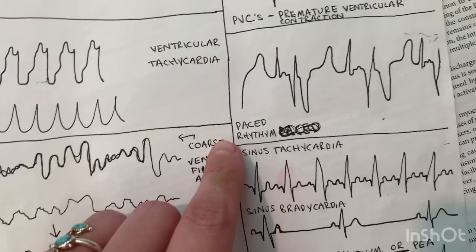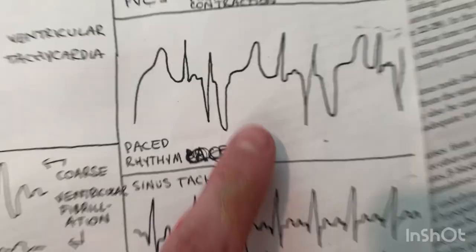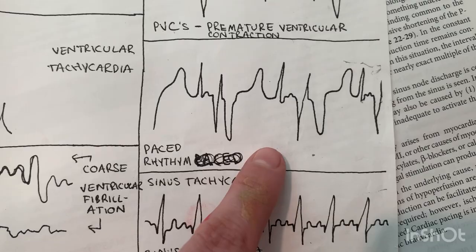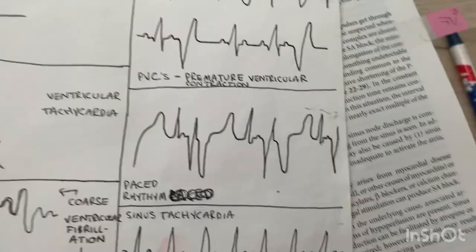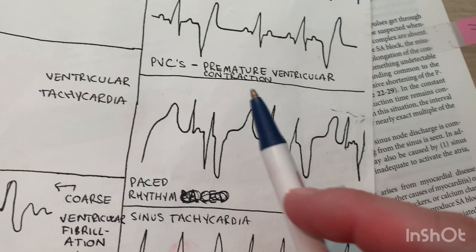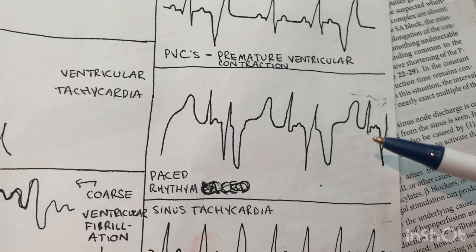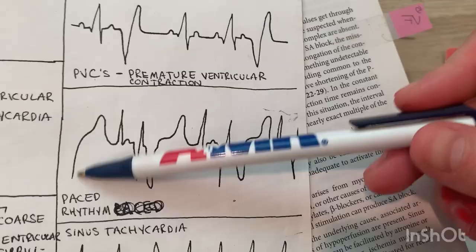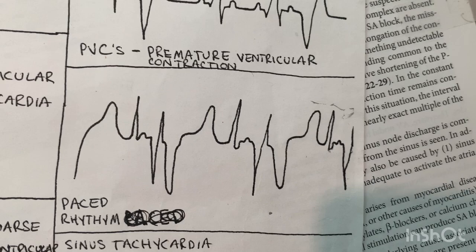There are lots of different types of pacemakers, and every paced rhythm might look a little different depending on the underlying rhythm, the patient's condition, and what type of pacemaker they have. For the purposes of this test, just recognize that when you see these really weird, extremely narrow little spikes in the middle of this odd-looking rhythm, it's a paced rhythm. On a real call, you can ask if the patient has a pacemaker — people have been confused thinking it was a bad rhythm, then asked and the patient said 'yeah, this is fine.'